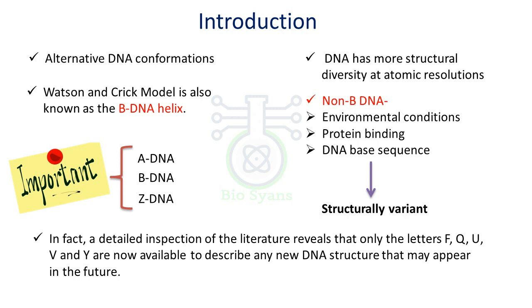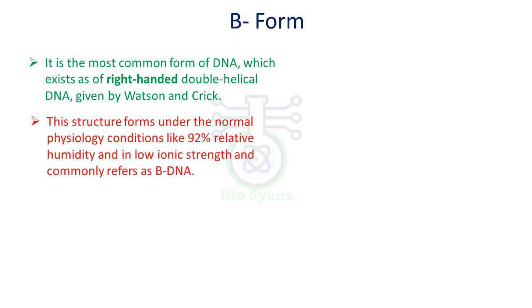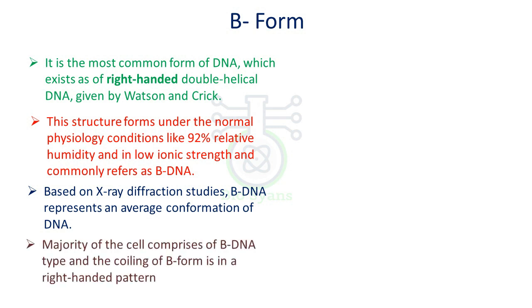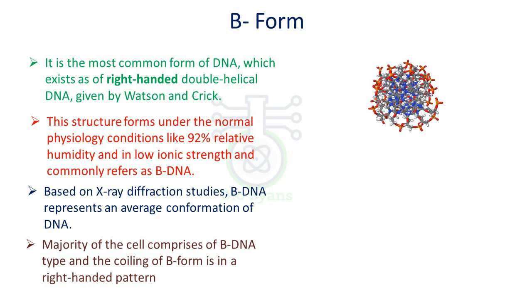The B-form of DNA, which is very famous given by Watson and Crick, is a right-handed double helix with ten nucleotide patterns. The structure forms under physiological condition of 92% relative humidity and in low ionic strength. Under X-ray diffraction, it has been found that B-DNA represents the average conformation of all DNAs, and the majority of the cell comprises of B-DNA which rotates helically in the right-hand direction.